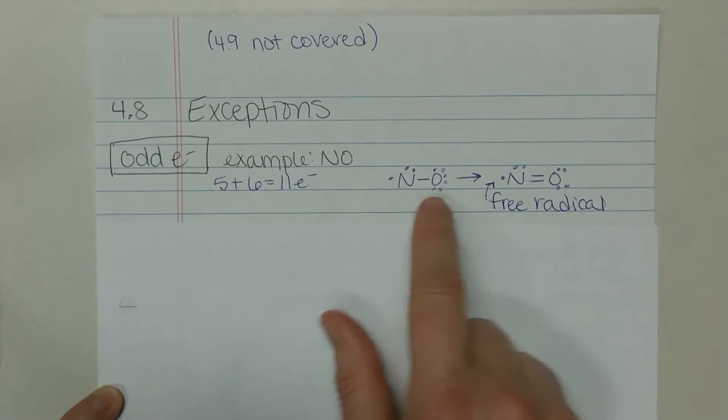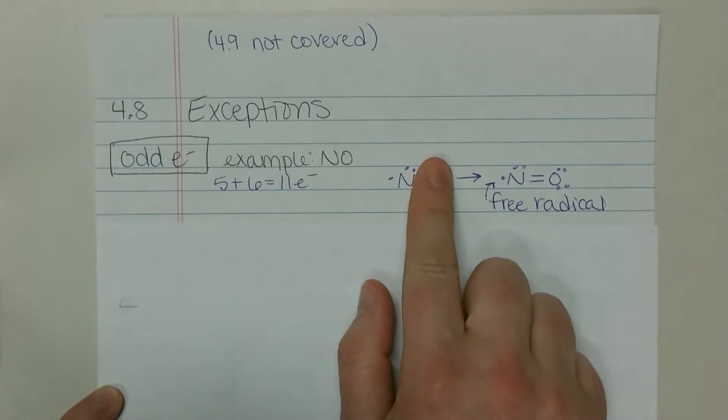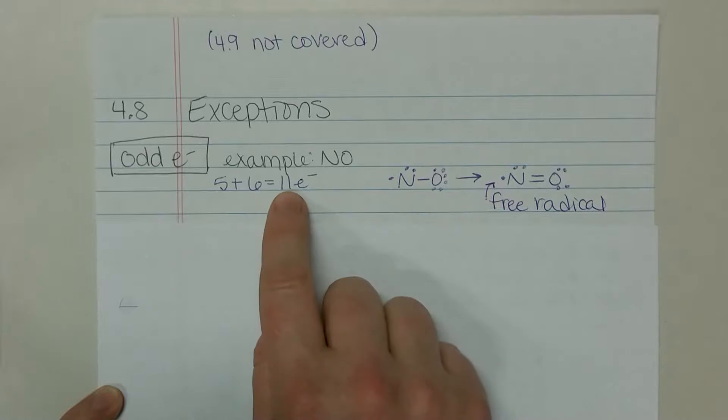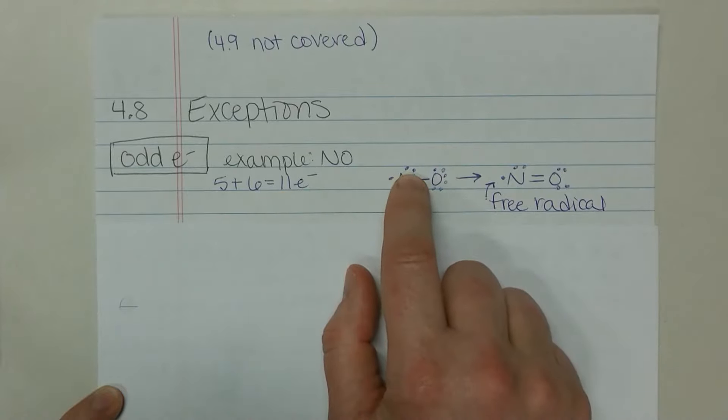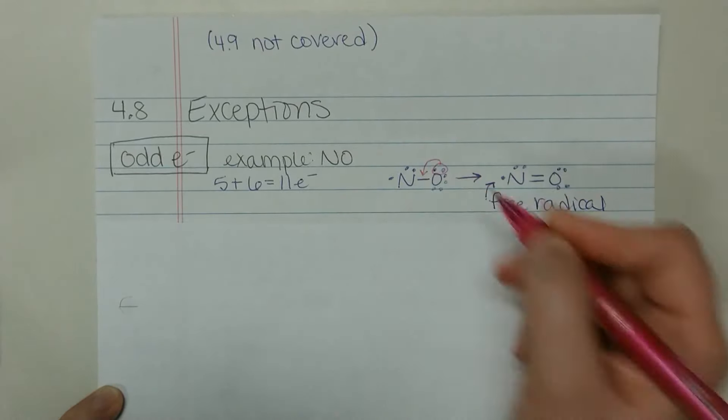So we have two electrons in the bond, two four six on that oxygen for a total of eight electrons there. We have 11, so we have 10 with that pair and then the 11th electron goes on nitrogen. Nitrogen needs more electrons, so we take a pair of electrons from the oxygen to form a double bond.